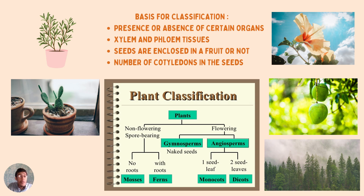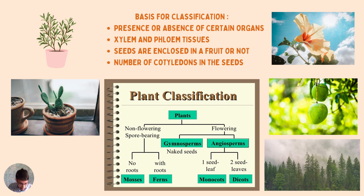Another criterion is the number of cotyledons in the seed — how many equal divisions a seed can be divided into. Based on whether plants have flowers or not, they are classified into two divisions: Cryptogams and Phanerogams. Phanerogams are further classified into Gymnosperms, where seeds are outside the fruit, and Angiosperms, where seeds are inside the fruit.